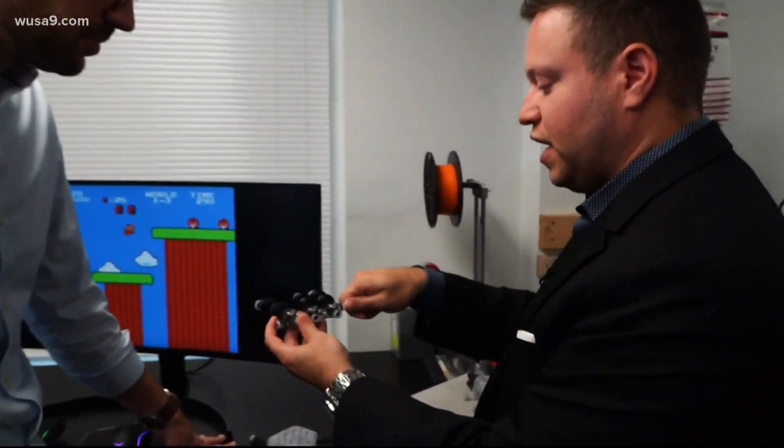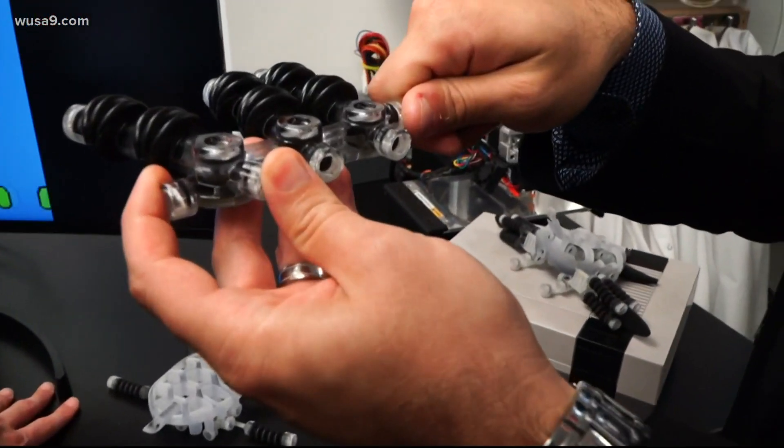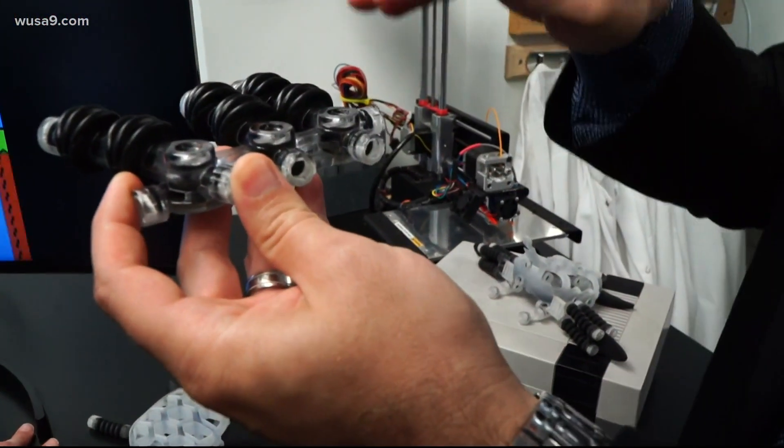And here's how it worked. A computer program pumps air through the fingers of the robot. You connect the pressure here and then the computer is basically just increasing and decreasing that pressure.